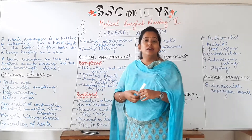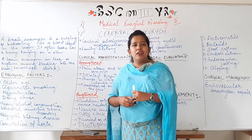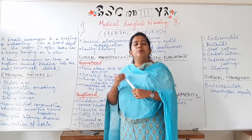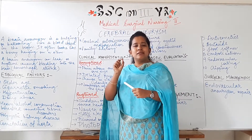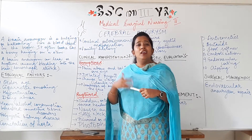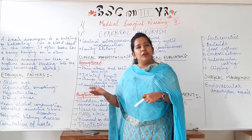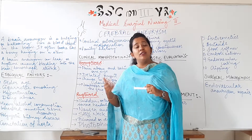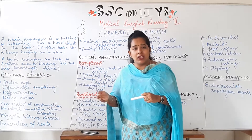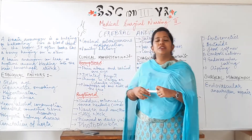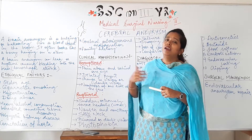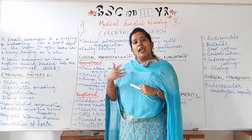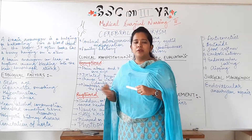Another inherited cause is polycystic kidney disease, a condition where many cysts or small sacs form inside the kidney. Because of that, blood pressure increases greatly, and due to this increased blood pressure, the person can develop an aneurysm — and if it happens in the brain, it will be a brain aneurysm.